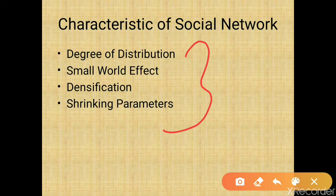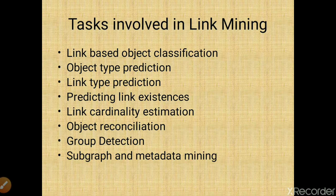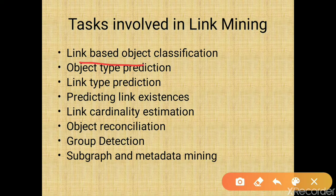Next is link mining. Link mining is a new emerging area in data mining. It refers to a data mining technique that explicitly considers links when building predictive and descriptive models of linked data. Links are generally relationships among data instances. The tasks involved in link mining include: object classification, object type prediction, link type prediction, predicting link existence, link cardinality, object reconciliation, group detection, and subgraph and metadata mining.